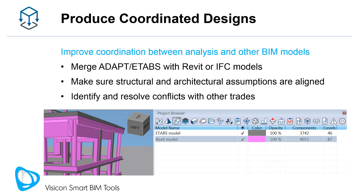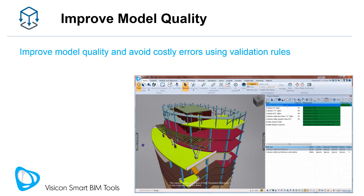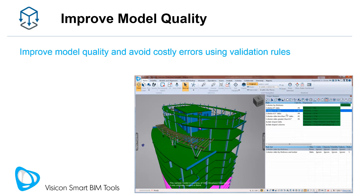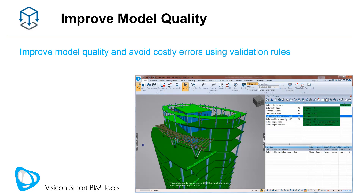If you have access to them, you can also coordinate your structural design with other trades, hopefully identifying and resolving issues early. Besides giving you access to better model visualization and navigation capabilities, Visicon can help you identify potentially costly modeling errors and improve overall model quality and consistency.